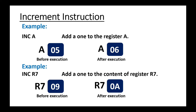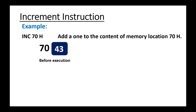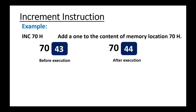Next is INC 70h. 70h is a direct address — basically it is adding one to the content of memory location 70h. Before execution, that memory location is having 43 as data, and after execution it becomes 44 by adding one.